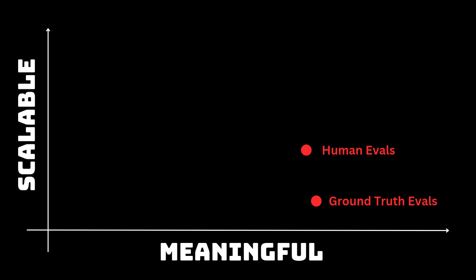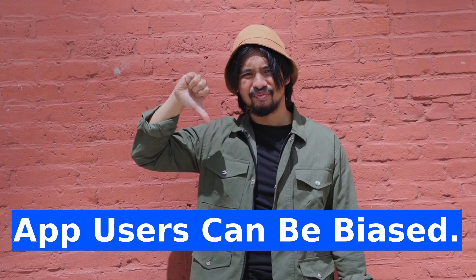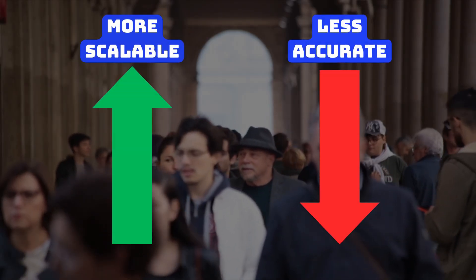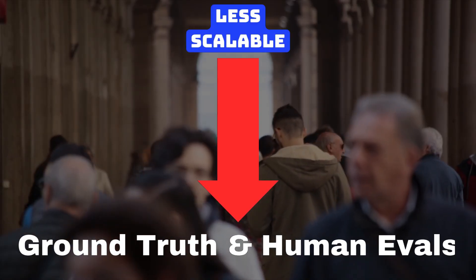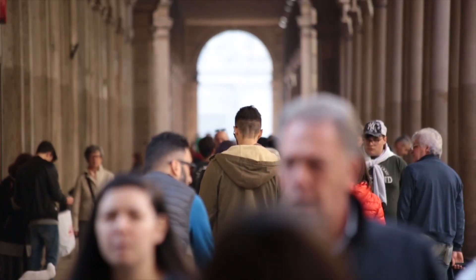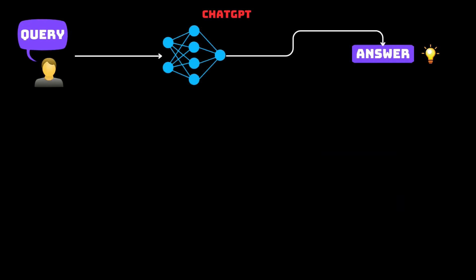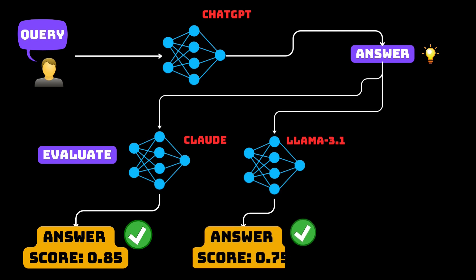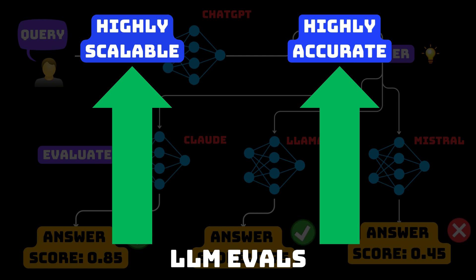Next are human evals, which are somewhat the same as ground truth evals, but instead of domain experts, actual users of the app rate the final responses. These user ratings are a little less reliable as the users are not experts and can be biased, but they are a bit more scalable than ground truth evals because of the high number of app users. Another good solution is LLM evals, which use other LLMs to generate scores for app outputs. This is highly scalable and has almost the same accuracy as human and ground truth evals.